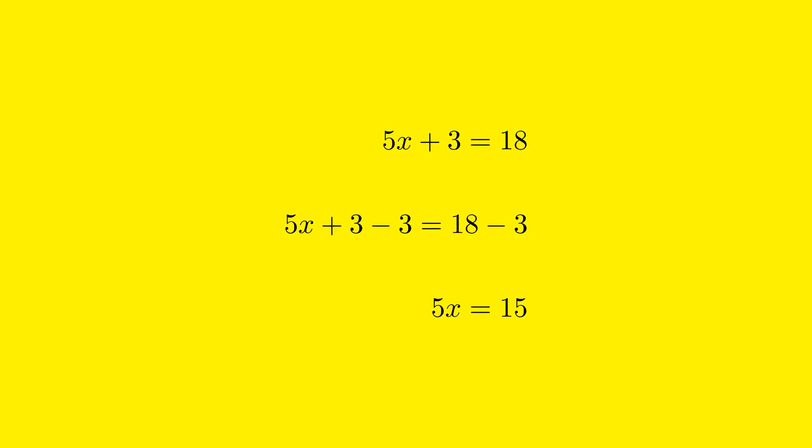First, we want to isolate the variable x. Notice we have the equation 5x plus 3 equals 18. The goal is to get the term with x alone on one side of the equation. To do that, we need to get rid of the 3 that is added to the 5x.